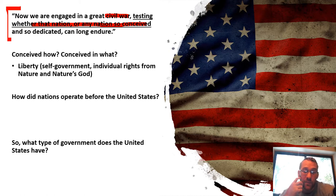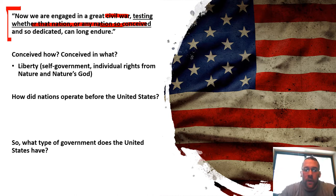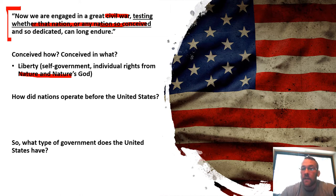We're testing whether or not a nation conceived in liberty can long endure. So what is liberty? A lot of people use the word but don't have a good definition. Liberty is self-governance — self-governance of yourself and then self-government where people elect others to come together and represent their individual rights. In the Declaration of Independence, we have the idea of nature and nature's God, where rights come from the fact that you're born a free human, so you have these rights from birth. Lincoln is saying we are conceived and dedicated in this idea of liberty, 87 years ago.